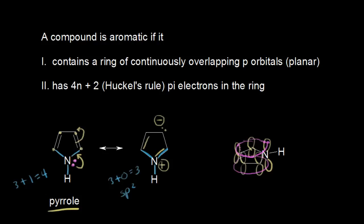Let's go ahead and check the criteria for aromaticity. Pyrrole does contain a ring of continuously overlapping p orbitals. And it does have 4n plus 2 pi electrons in that ring. We had these pi electrons — that's 2, these pi electrons — that's 4, and then these pi electrons in magenta are actually delocalized in the ring, giving us 6 pi electrons total. So if n is equal to 1, 4 times 1 plus 2 gives me 6 pi electrons. Pyrrole has 6 pi electrons and a ring of continuously overlapping p orbitals, so we can say that it is aromatic.